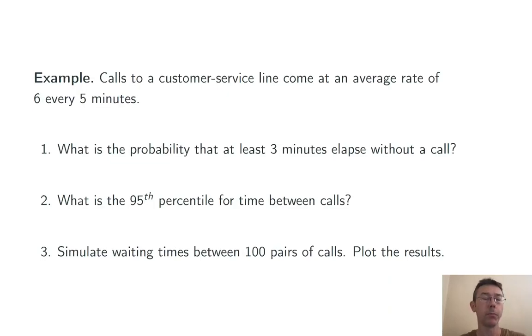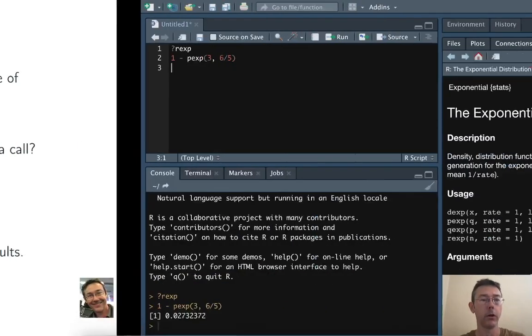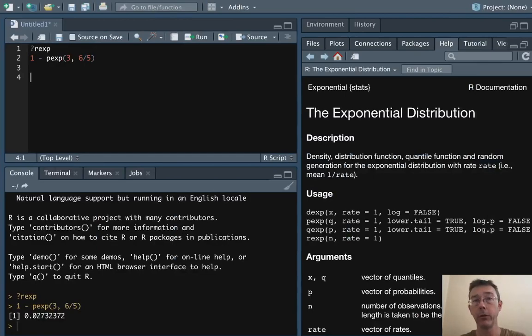Second, what's the 95th percentile for the time between calls? Okay, so this one is going to be qexp. We're given a probability percentile and we want to get a value back.